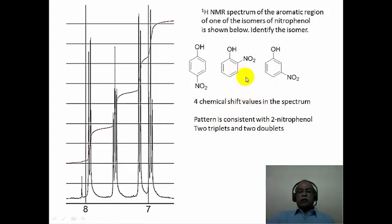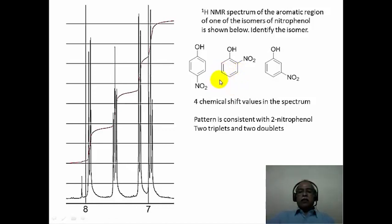How do we know this? If you take this particular hydrogen ortho to the nitro, it has one ortho partner so it will be a doublet. The hydrogen ortho to the hydroxy functional group will also be a doublet because of ortho coupling. The hydrogen para to the hydroxy and meta to the nitro has 2 ortho coupling partners, so it will essentially be a triplet. Similarly, the other interior hydrogen also has 2 ortho coupling partners, giving a triplet. So you see 2 triplets for the interior hydrogens and 2 doublets for those ortho to the nitro and hydroxy groups.